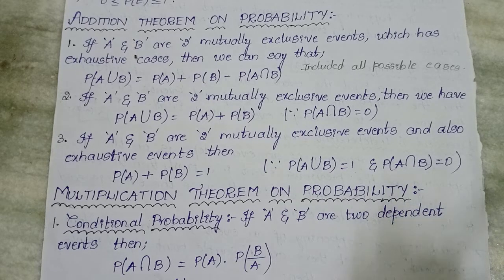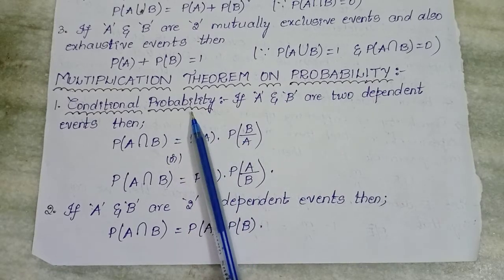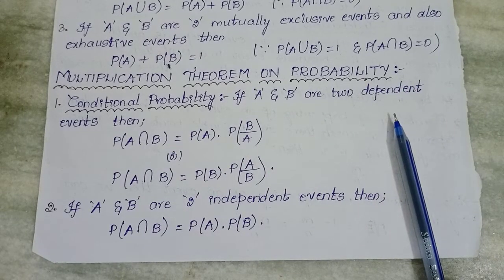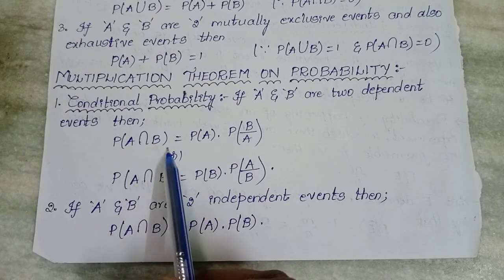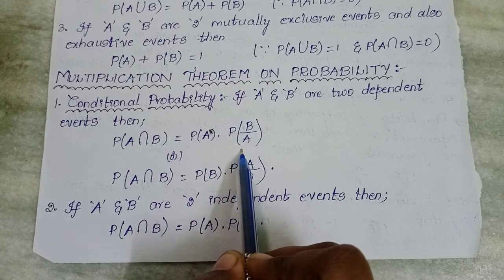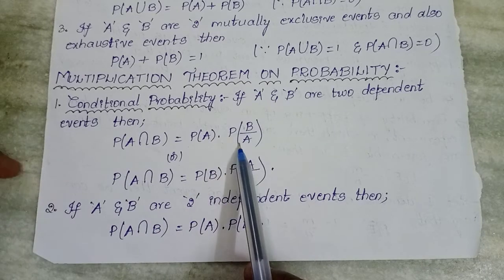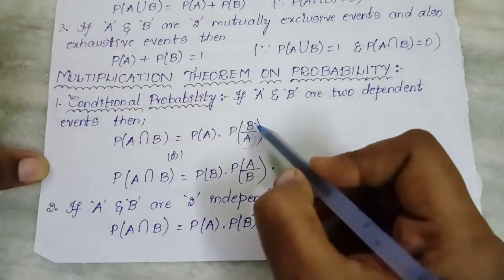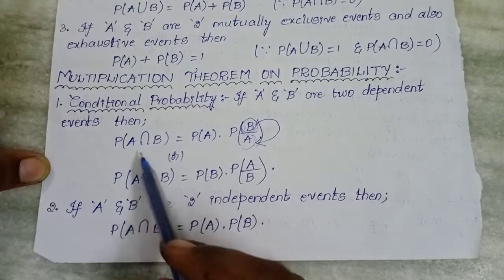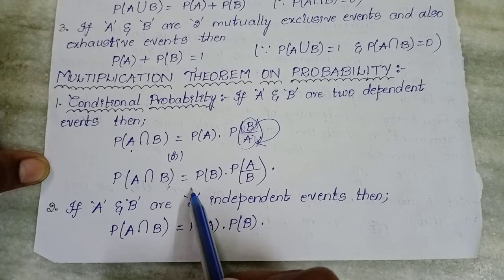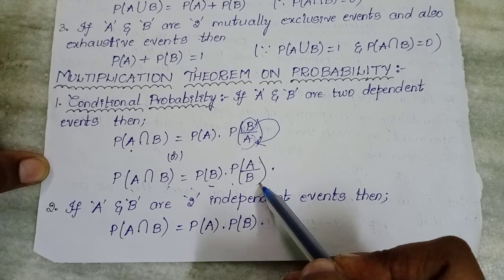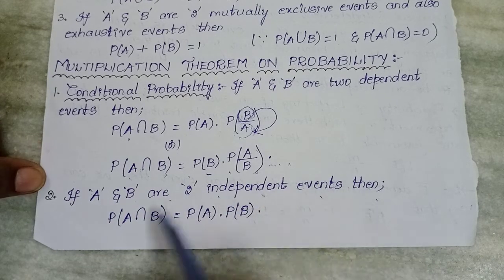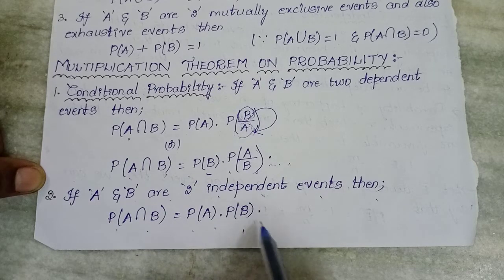Multiplication theorem on probability. First, conditional probability: if A and B are two dependent events — meaning the present event depends on the past event — then P(A ∩ B) = P(A) × P(B|A). The occurrence of event B depends on A, so it is a dependent event. Also, P(A ∩ B) = P(B) × P(A|B). If A and B are two independent events, then P(A ∩ B) = P(A) × P(B). That's it.